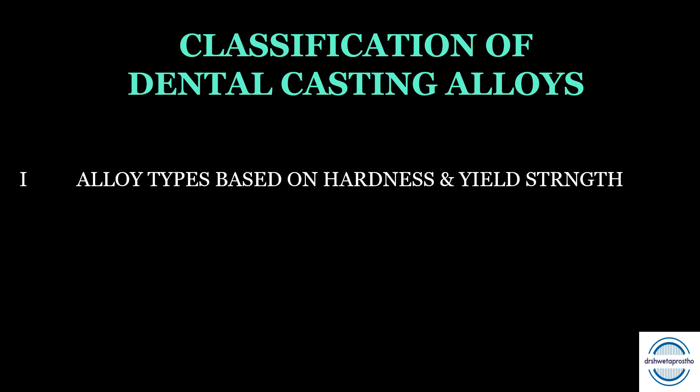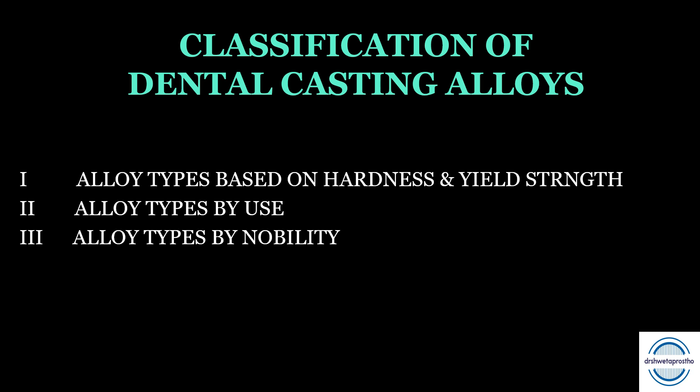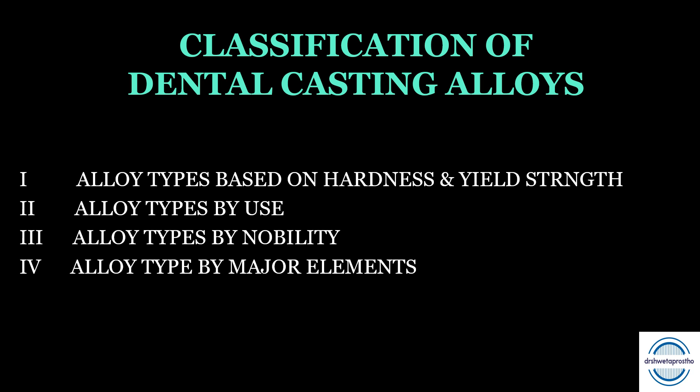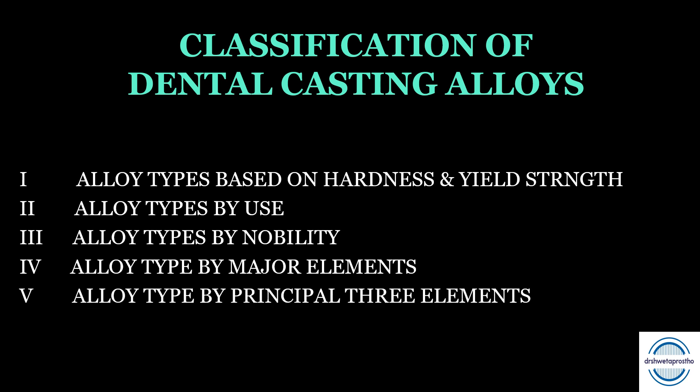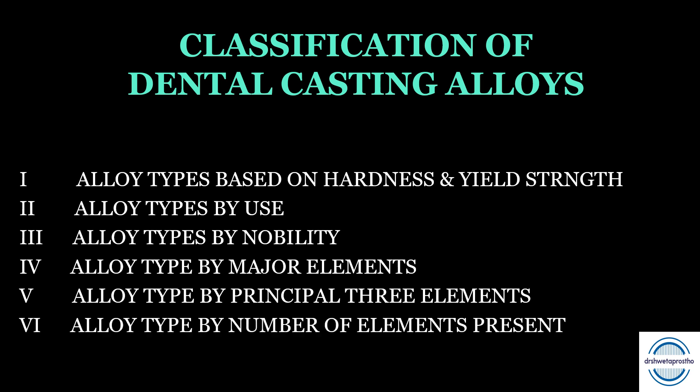Now we will discuss the classification systems of dental casting alloys. There are many classifications given in different books. For a long note, try to memorize at least two to three classification systems. The classifications are: first, alloy types based on hardness and yield strength; second, alloy types by use; third, alloy types by nobility; fourth, alloy types by major elements; fifth, alloy types by the principle three elements present in the alloy; and sixth, alloy types by the number of elements present.